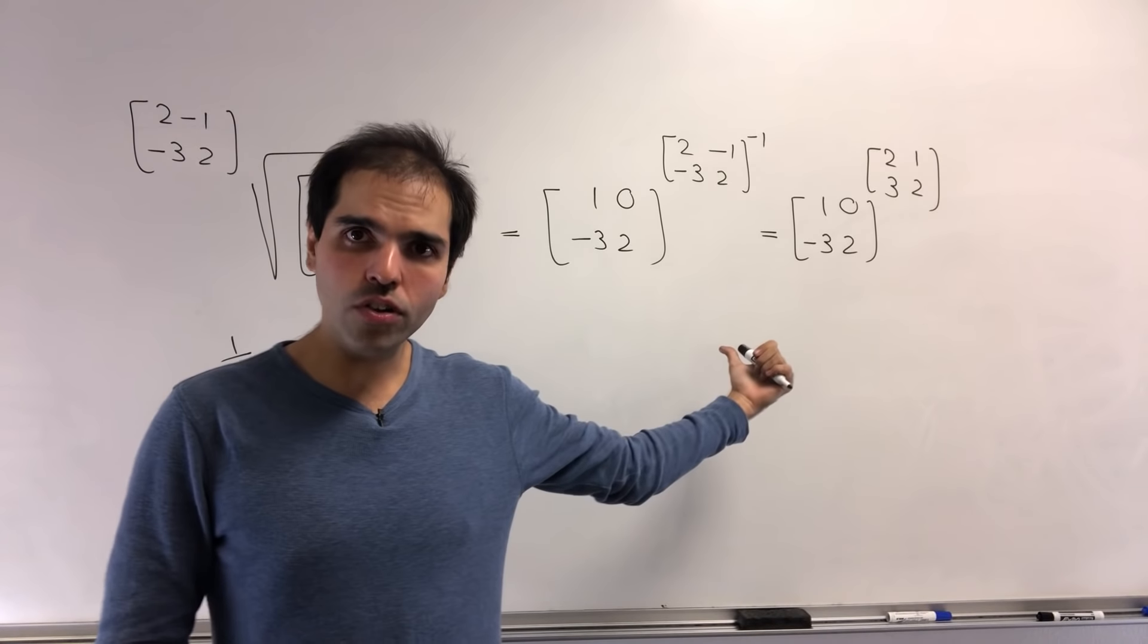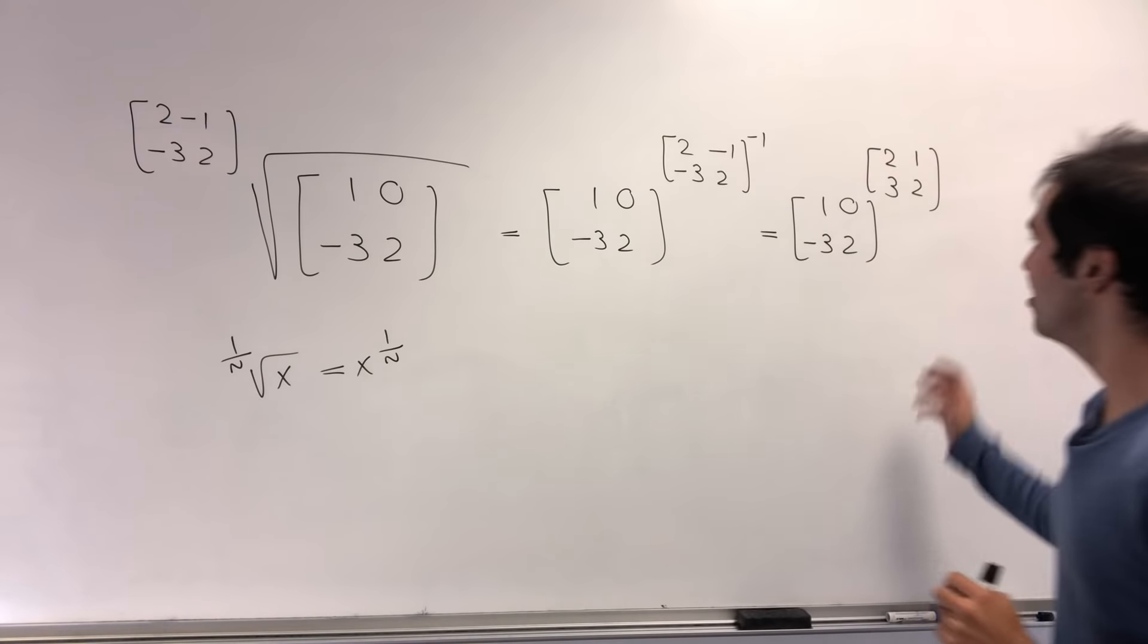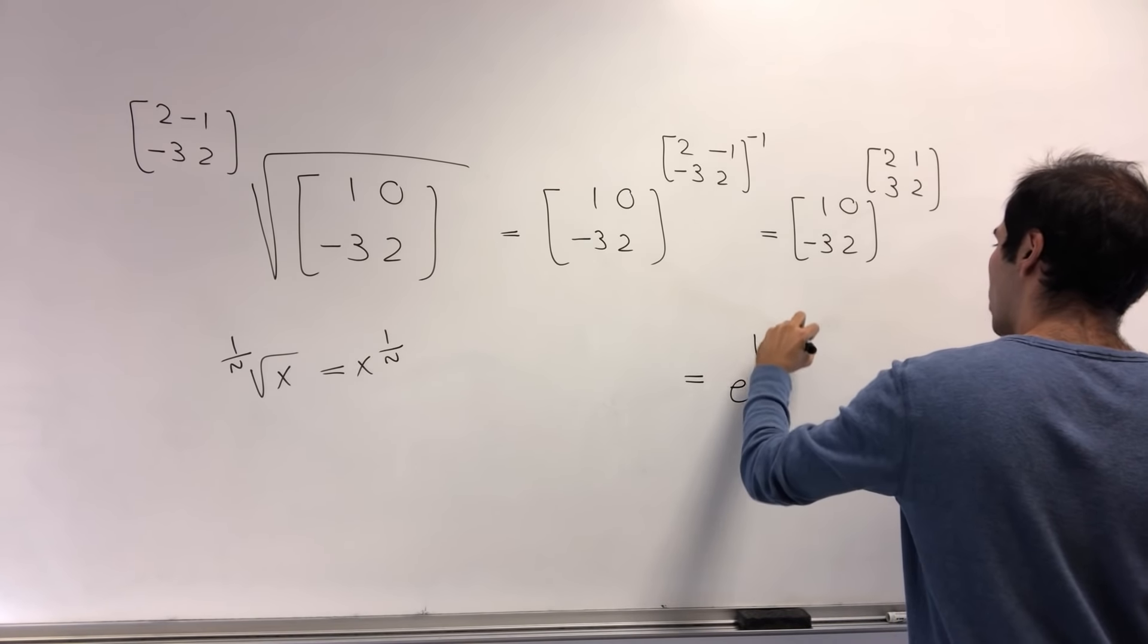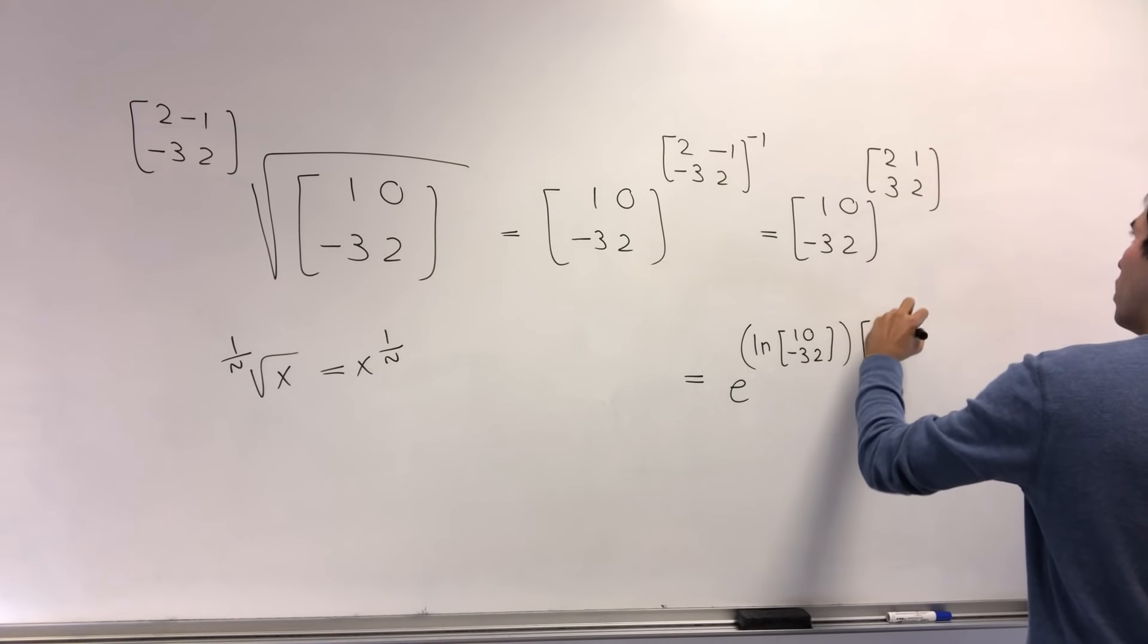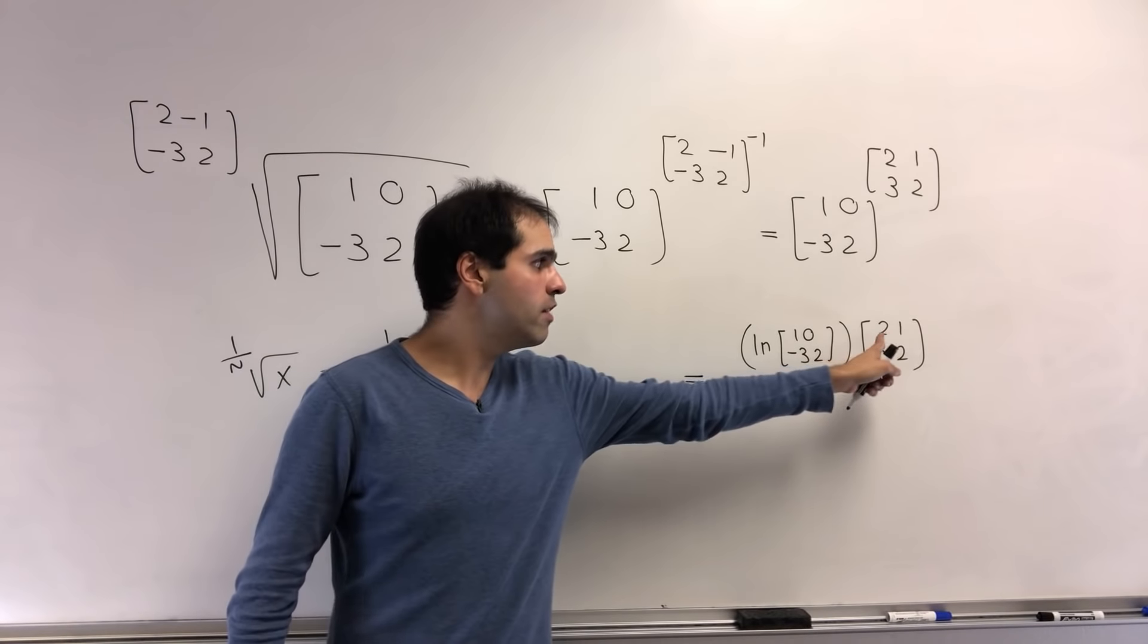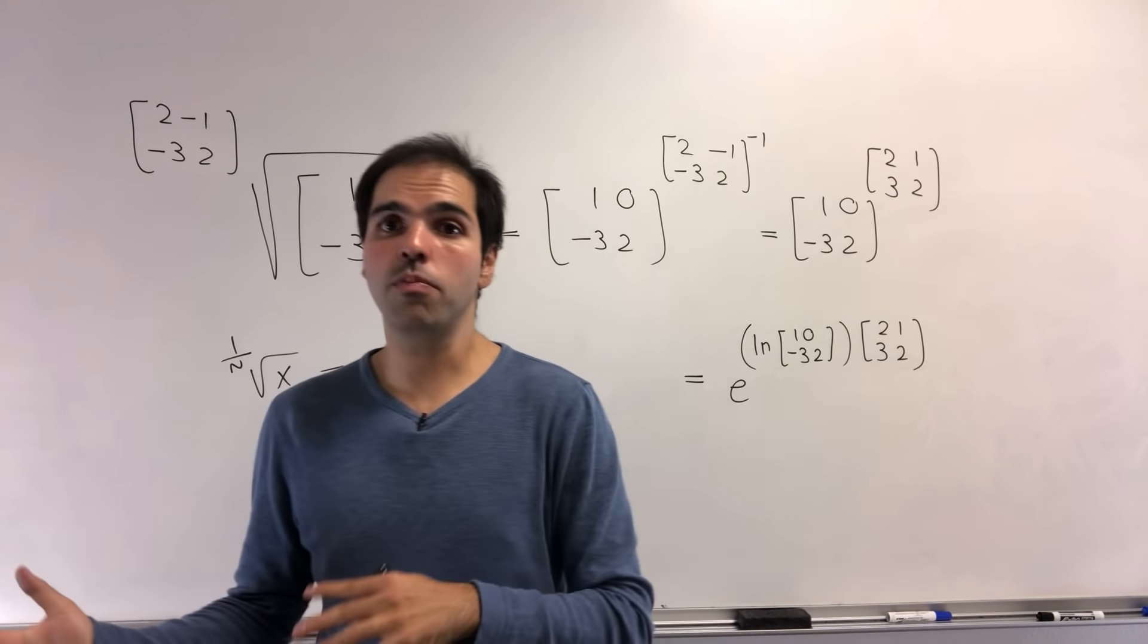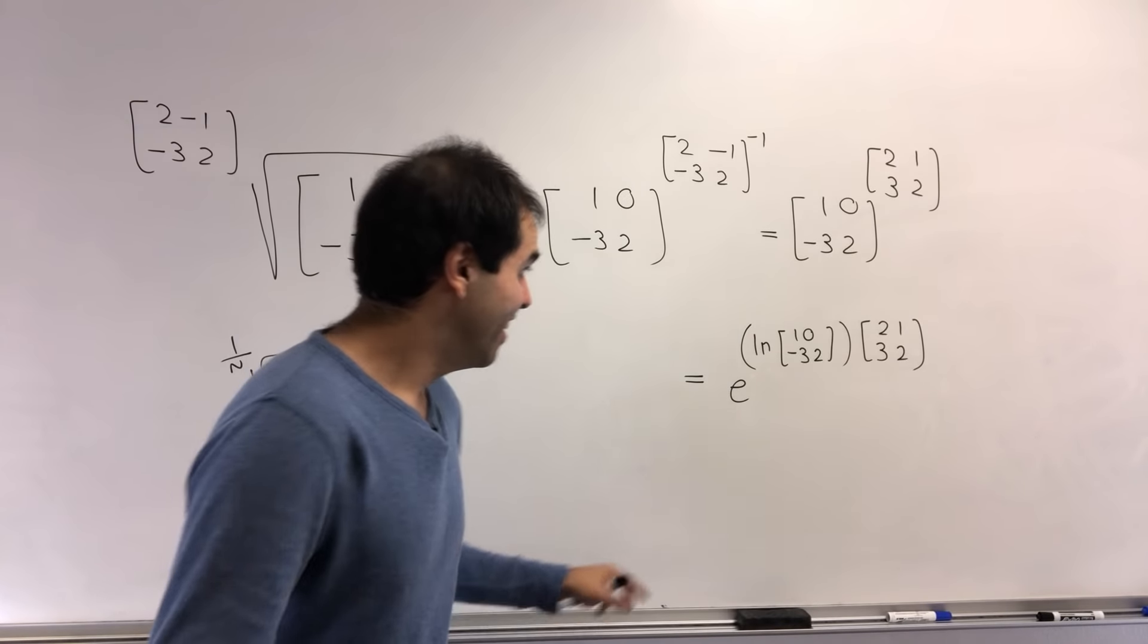Now the question is, how do we evaluate this power? Well, I have done a video on this where we find matrix powers. But here, the trick is just to write x as e to the ln of x. So this is just e to the ln of 1, 0, minus 3, 2, and then times 2, 1, 3, 2. And of course, I could have done 2, 1, 3, 2 times ln, which would give you a different answer. So technically, we would have to say left power or right power. But here, I choose the right power because right is always right.